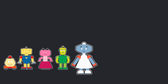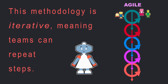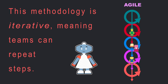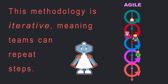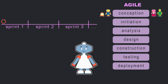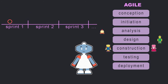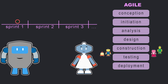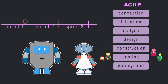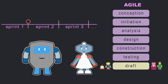IT project managers are starting to use a new approach called Agile. This methodology is iterative, meaning teams can repeat steps. Unlike waterfall, agile teams can go back upstream instead of having to keep moving downstream. Agile teams work in sprints, which are short periods of time. By the end of this two- or three-week period, the team presents a working version of the product to the client.